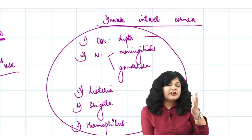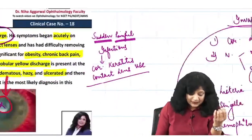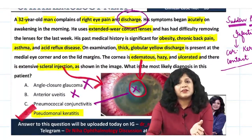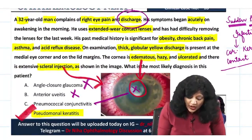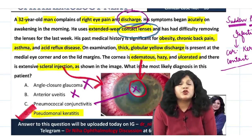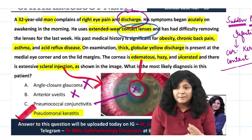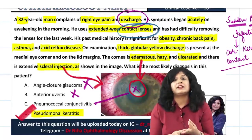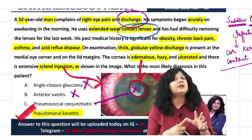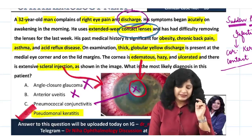Moreover, even if it were happening, it would not occur in such a short time — they say this is a very acute condition that just started on awakening in the morning. Looking at the history of contact lens use, the condition that is acute, occurring in a 32-year-old male, causing sudden pain, yellow discharge, and corneal ulcer, is pseudomonas keratitis.